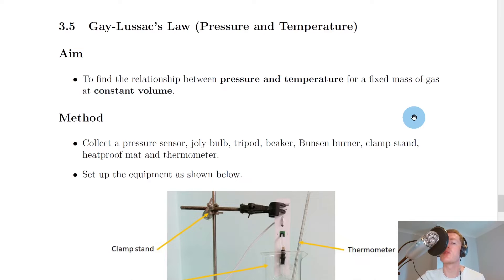So remember for Boyle's Law we looked at the relationship between pressure and volume and we kept the temperature constant, whereas this time we're looking at the relationship between pressure and temperature and we're keeping volume constant. But we're also looking at a fixed mass of gas for this case as well, where fixed mass of gas just means if you imagine the gas has a certain number of particles and that stays the same.